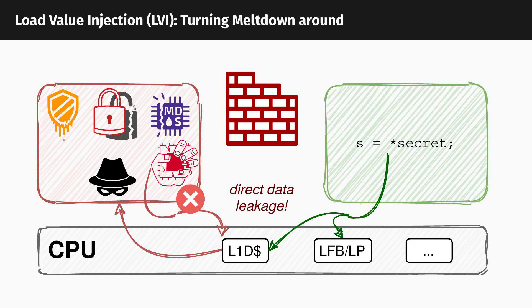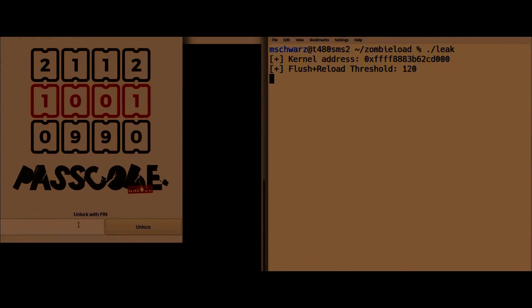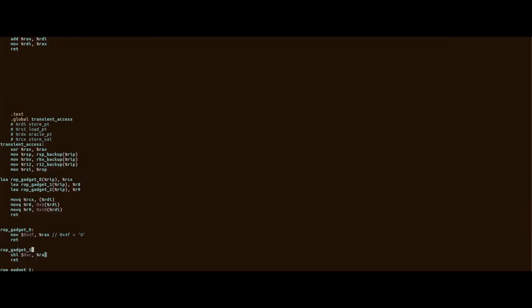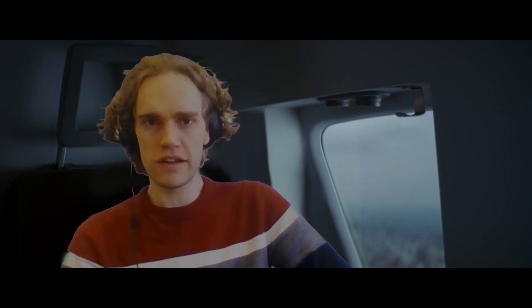We overlooked one square — the last one. That's LVI. The idea of Load Value Injection is quite simple: we turn Meltdown around. You bring the victim into a fault, and instead of leaking their secrets, you inject attacker-controlled data. It's called Load Value Injection — it's not strictly speaking leaking.